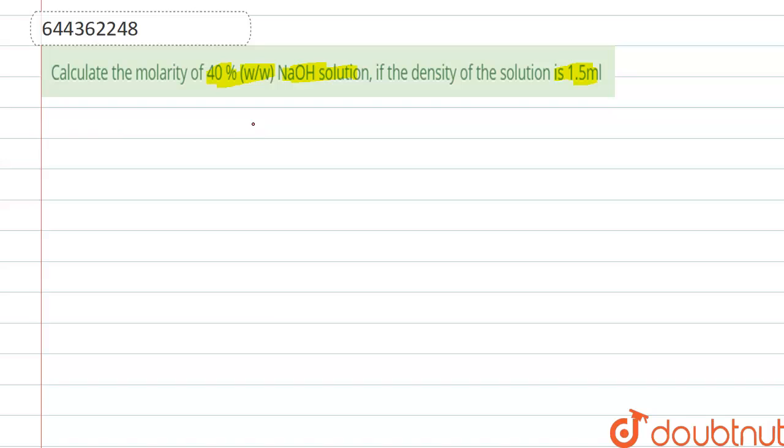So 40% weight by weight NaOH solution means 40 grams of NaOH present in 100 grams of solution.